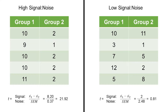On the right side, the formula is the same — signal relative to noise. The difference between the means is 2, and the standard error is 2.48. Notice we have a smaller signal, going from 8.2 down to 2, and more noise, from 0.37 up to 2.48. So the resulting t-value is much smaller: 0.81.